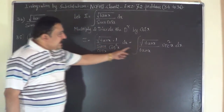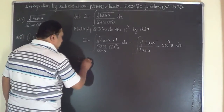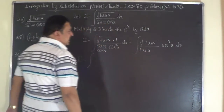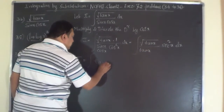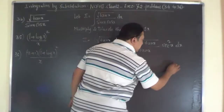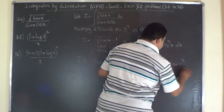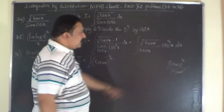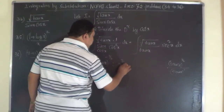The purpose of writing it in this way is to enable a clean substitution. The numerator is root of tan x and the denominator is tan x, so tan x goes to the numerator as tan x to the power of minus half. With tan x to the half in the numerator and tan x to the power of 1 in the denominator, this gives tan x to the power of minus half into sec²x dx.